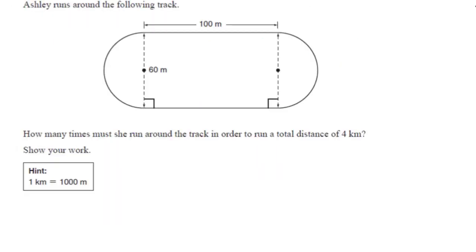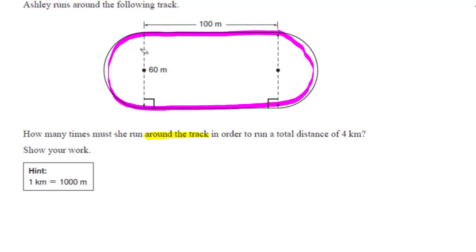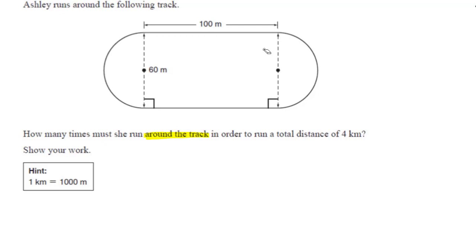Next example: how many times must someone run around a track to cover four kilometers? The key insight is that running around the track is a perimeter question, not area. First ask: am I covering something (area) or running/fencing around something (perimeter)? This is perimeter. The straight sides are each 100 meters, and the two curved ends together form a full circle.